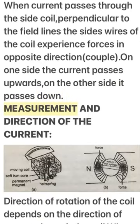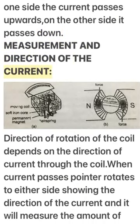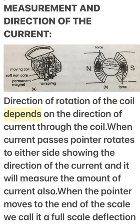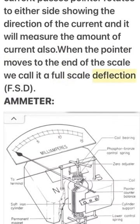Measurement and Direction of the Current: The direction of rotation of the coil depends on the direction of current through the coil. Once current passes, the pointer rotates to either side, showing the direction of the current and measuring the amount of current. When the pointer moves to the end of the scale, we call it full-scale deflection (FSD).